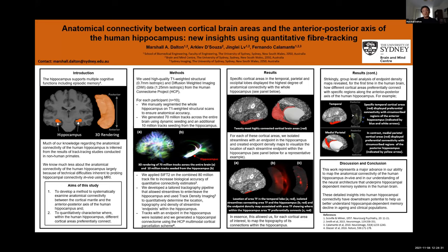Overall, our method represents a major advance in our ability to map the anatomical connectivity of the human hippocampus in vivo and in our understanding of the neural architecture underpinning hippocampal-dependent memory systems. Importantly, the method can potentially be harnessed to measure disease-related changes in connectivity between the hippocampus and cortical areas known to be affected by neurodegenerative disorders. Thank you for listening.